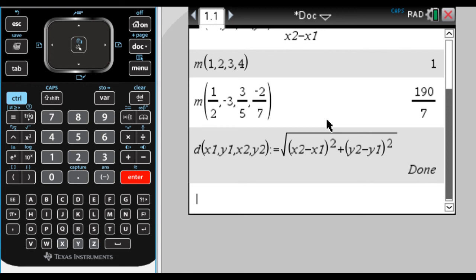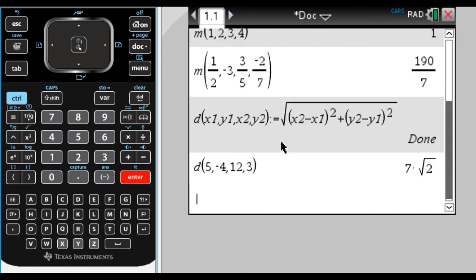And now what can happen here is if I press the var key, I can see there's m and d are both functions. So if I want to find the distance, say I want the distance between the point 5, negative 4, and the point, I don't know, 12, comma, 3. So it's 0.5, negative 4, and the 0.12, 3. You have to remember that, how you define the function. But when I press enter here, it's going to give me the exact value.